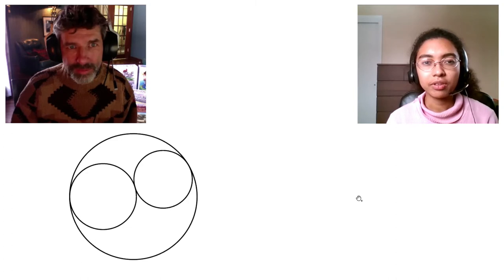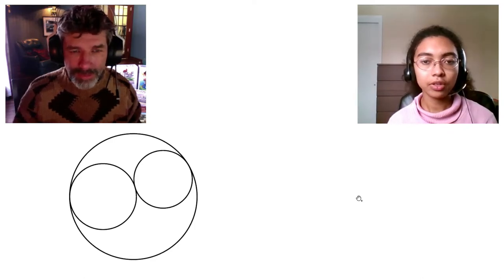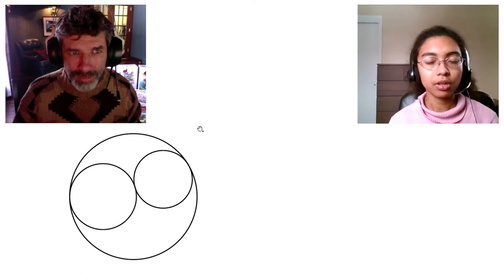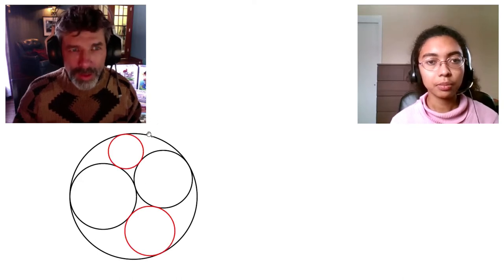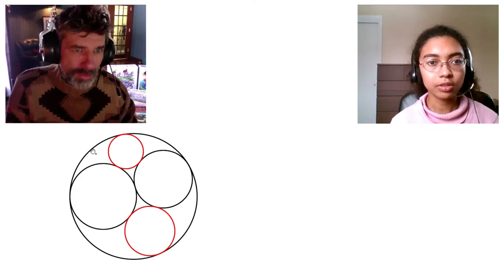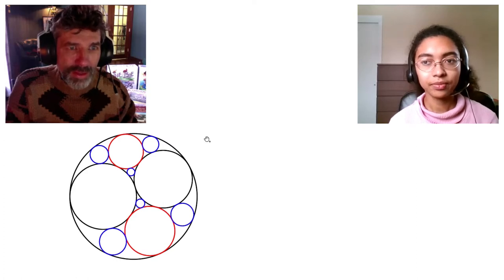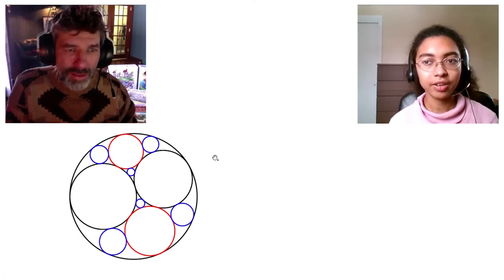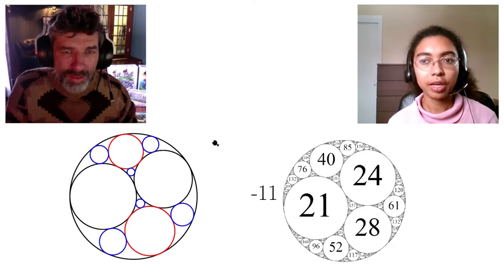So I study Apollonian circle packings. To explain what an Apollonian circle packing is, it's best if I show you how you construct one. When you create an Apollonian circle packing, you start out with three mutually tangent circles, and then you put in the two circles that are tangent to all three of these circles. And then you can put in another circle into each one of these little gaps here, like so. And then you can continue doing this over and over and over again, until you get something called an Apollonian circle packing.